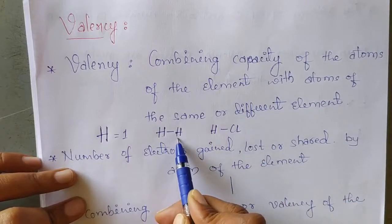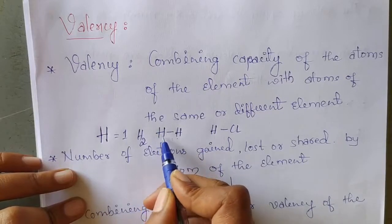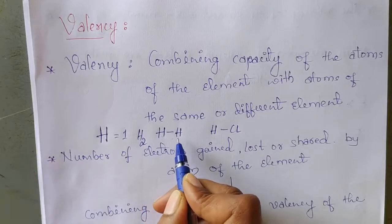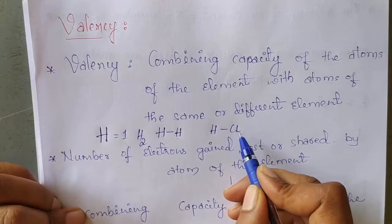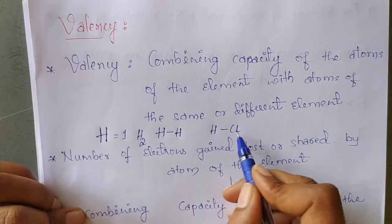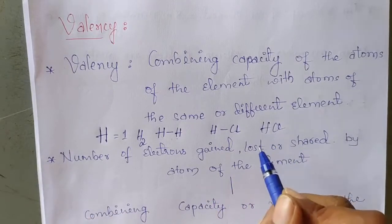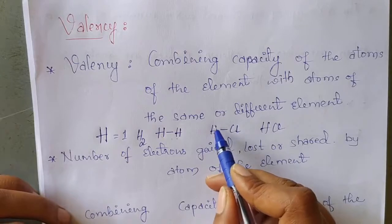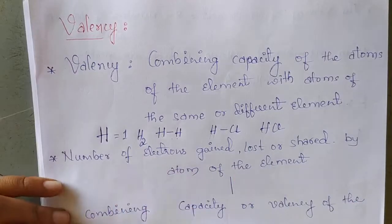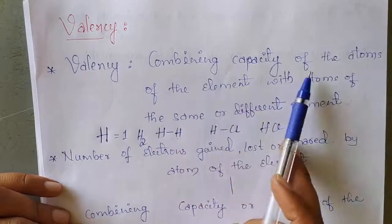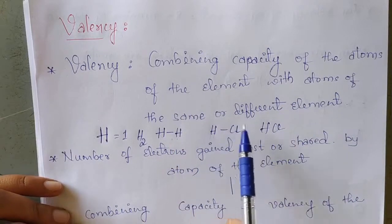See here, this is a hydrogen molecule, H₂. This hydrogen can form only one bond with another hydrogen atom or atom of another element. This is hydrochloric acid molecule, and here the combining capacity of hydrogen is 1. So valency is nothing but it is the combining capacity of the atoms of the element with the atoms of the same or different element.